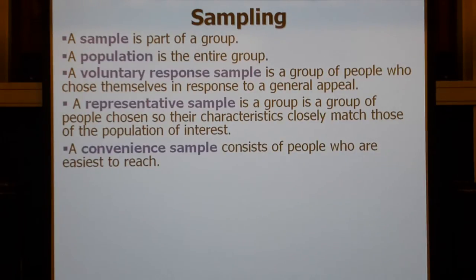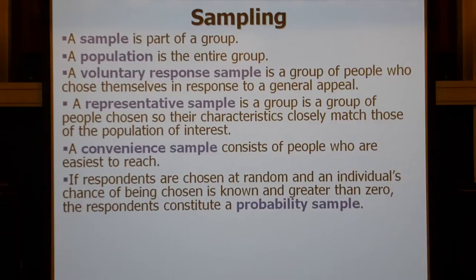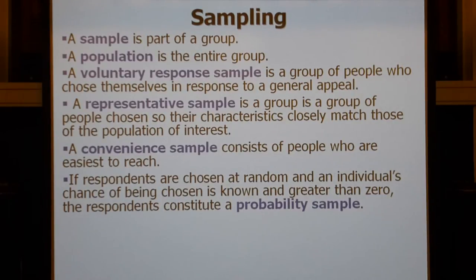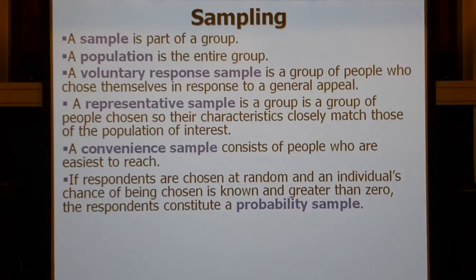A probability sample involves the following characteristics. First of all, people are chosen at random, and each individual's chance of being chosen is known by the researcher. If the probability of any particular individual being chosen is one out of 10,000, or one out of 600, or whatever — we know it. It's non-zero, greater than zero.